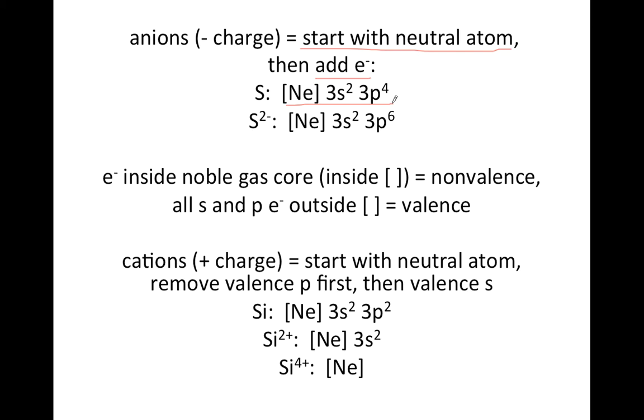That's the configuration of neutral sulfur. If you want to make it S²⁻, that means there's two extra electrons. So we're just going to write the same configuration we had before but change the ending from 4 to a 6 to show the extra electrons.